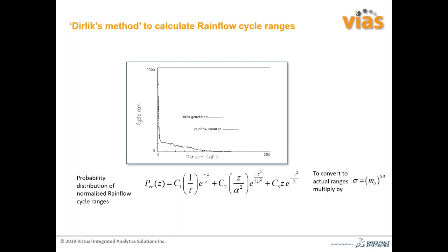This was a report for the wind energy industry comparing the cycle histogram from rainflow counting a time history of strain versus the one obtained from the PSD — and they are virtually identical. If the distribution of the rainflow cycles is virtually identical, then the calculation of fatigue life will be virtually identical as well.